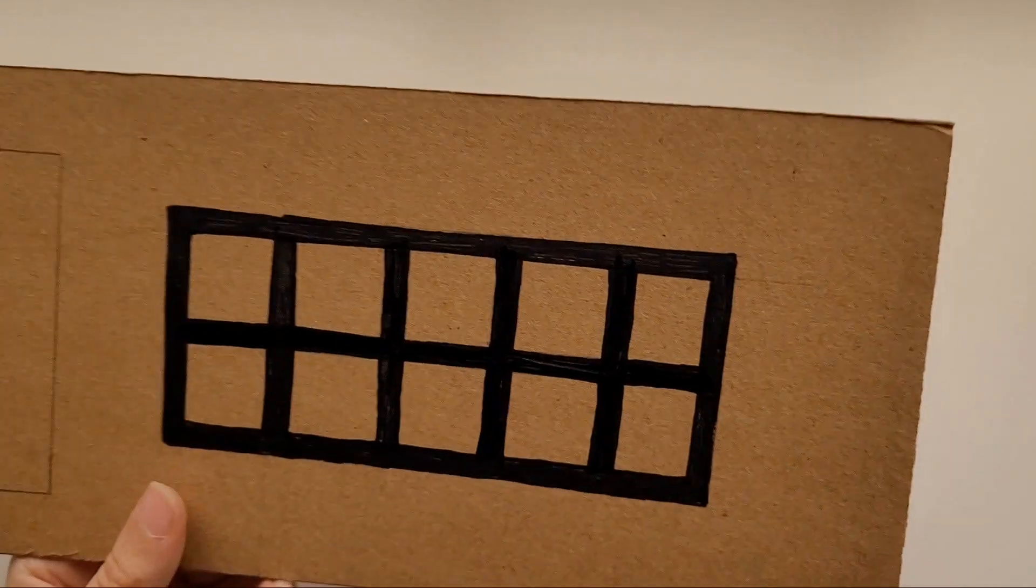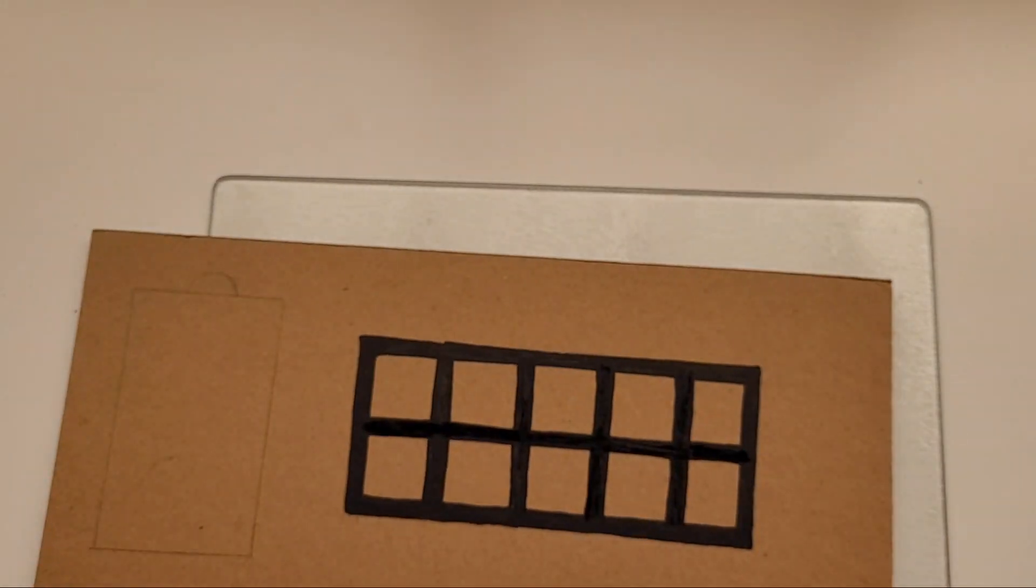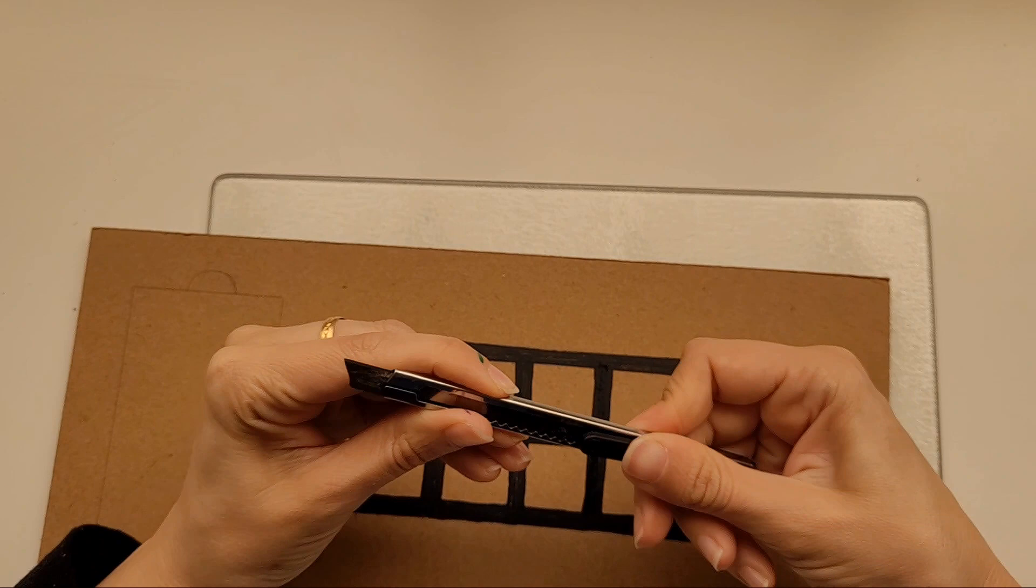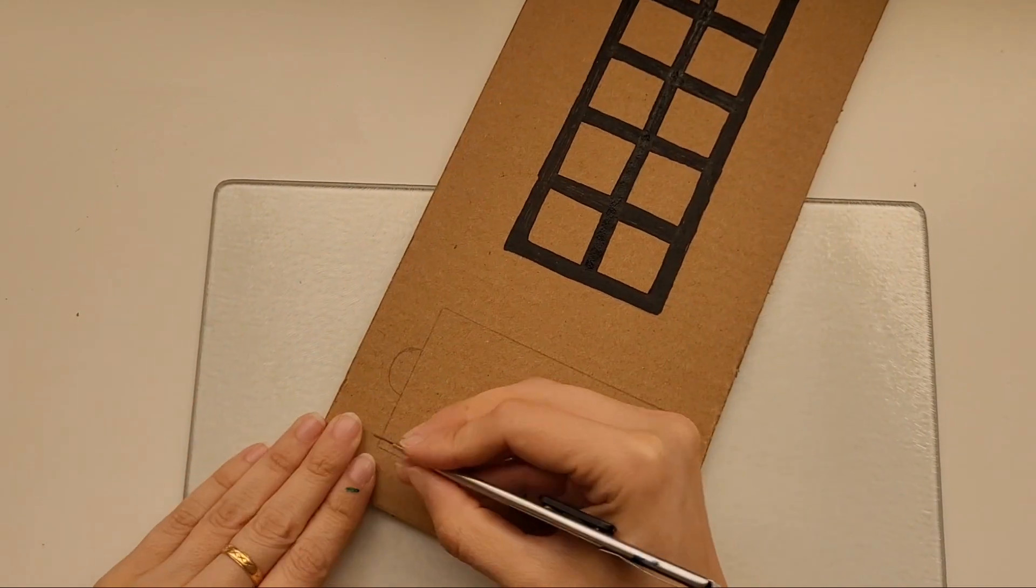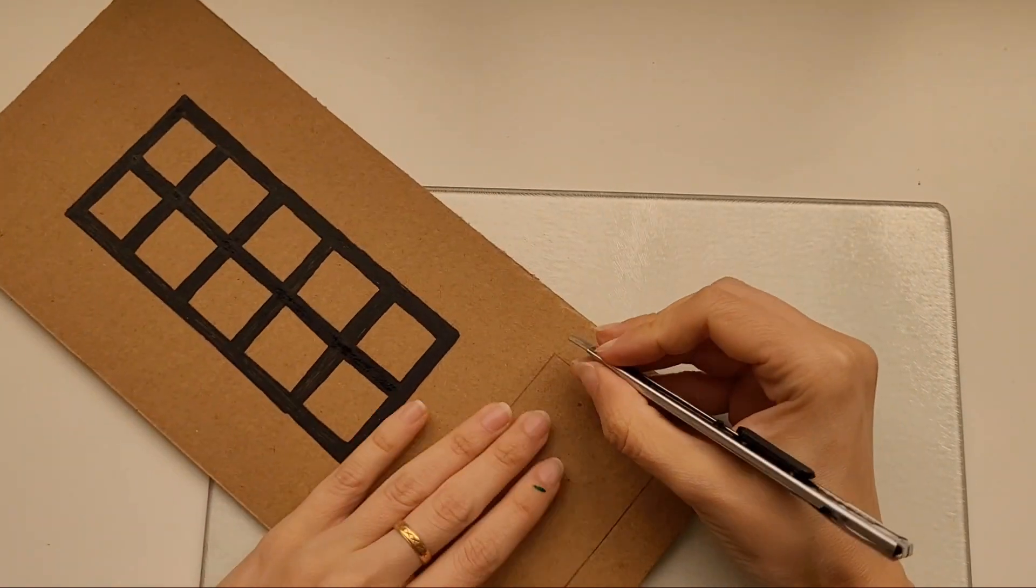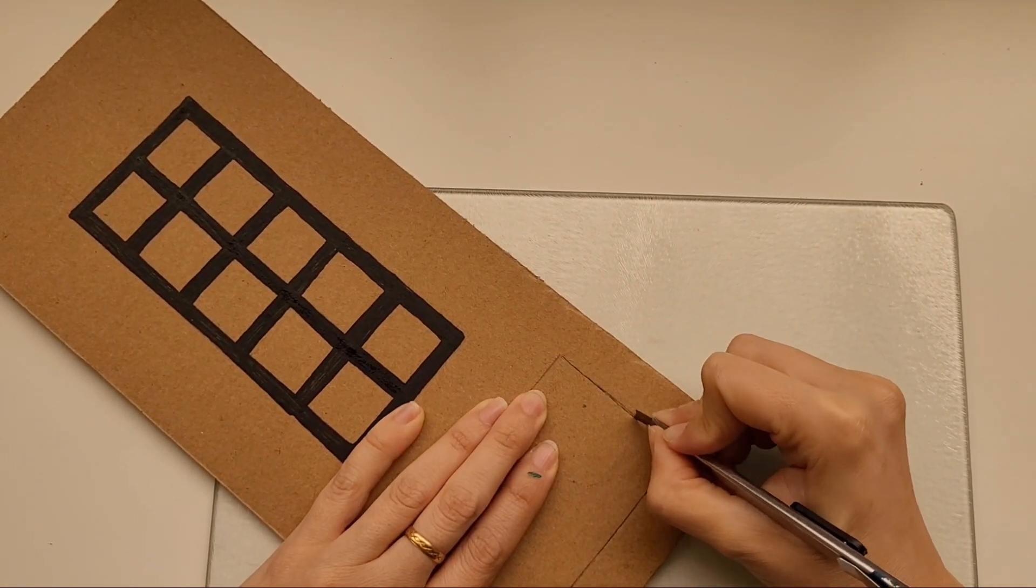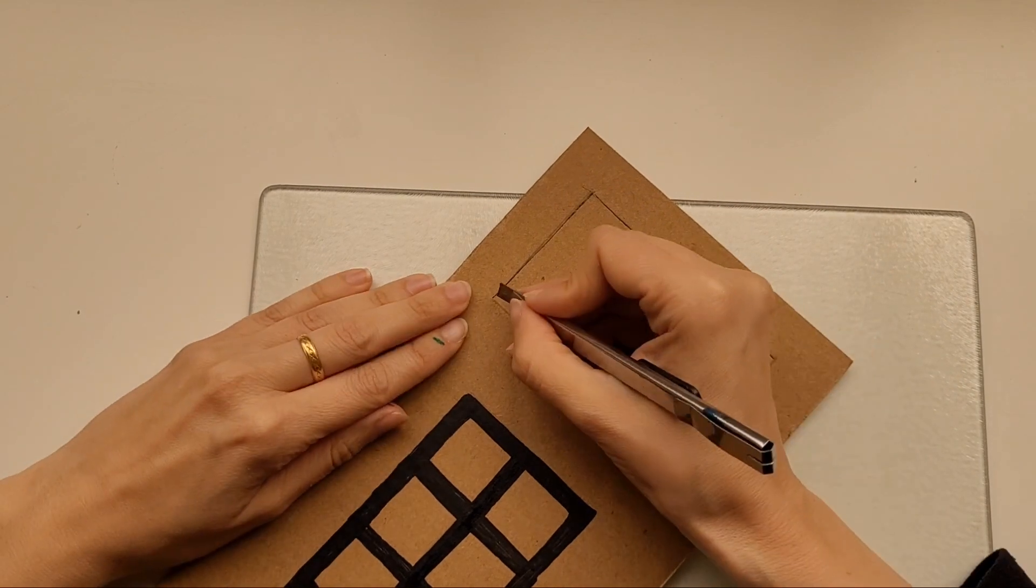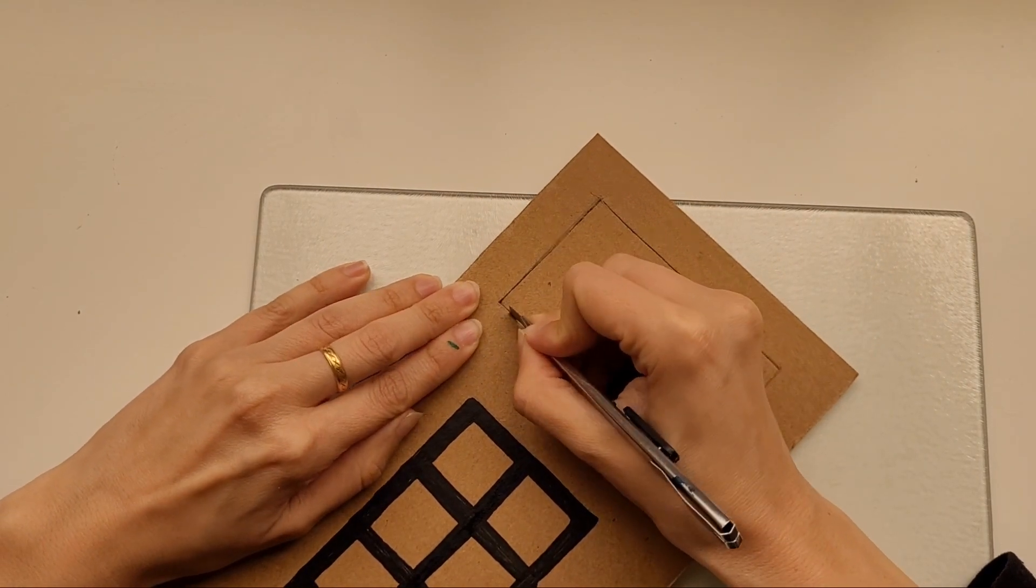Because we are going to cut out the squares in the middle and we need to have a thick border to hold it together. I'm going to use a cutter to cut out the rectangle. And on the top of the rectangle, I'm going to cut out a little half circle. That will give the child the ability to put the cards in and take them out easily.